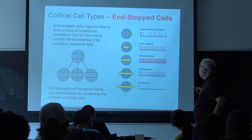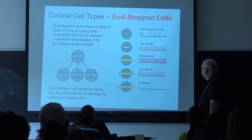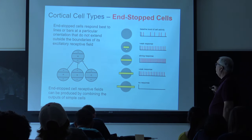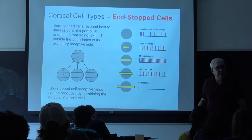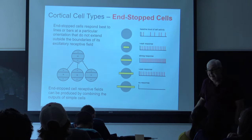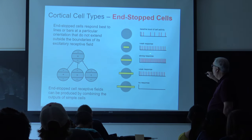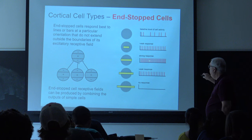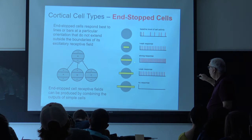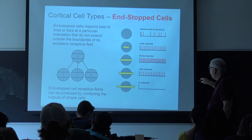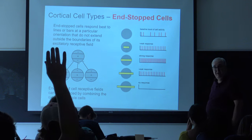Finally, there's a third type of cell — these are a bit rare, called end-stop cells. These cells are responsive to width and orientation, but also to the length of a bar. You get a moderate response with a short bar, maximum response when the bar just fills the excitatory receptive field, but if the bar is longer than that you get inhibition and the response drops off.